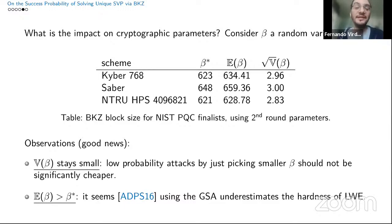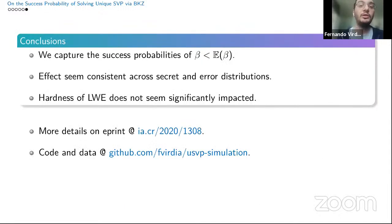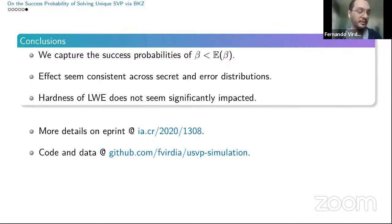The expected block size is higher than before, so the Alkim et al. methodology, when first used, underestimated the hardness of LWE. In conclusion, our simulators are able to capture the success probability of smaller-than-expected block sizes. The effect seems consistent across secret and error distributions for LWE, and the hardness of cryptographically specified parameters so far does not seem to be significantly impacted. Thank you.